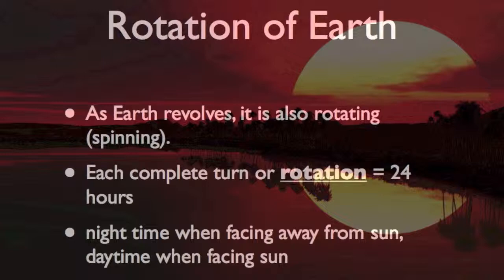At any one time, it is night on the side of Earth facing away from the sun. As Earth rotates, that side of Earth turns to face the sun, and the sun appears to rise. The sun's light shines on that side of Earth — it is daytime. Then, as that side of Earth turns away from the sun, the sun appears to set.